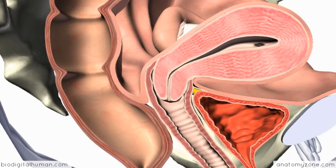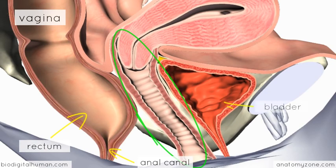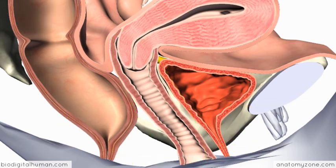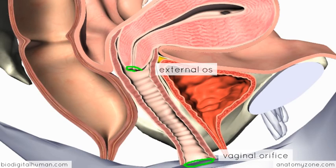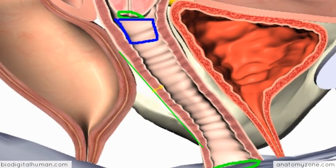The lower part of the female reproductive tract is the vagina, a fibromuscular tube that lies anterior to the rectum and anal canal, and behind the bladder and urethra. The vagina runs from the external vaginal orifice up to the cervix — the external os — and this internal end is known as the vaginal vault. Like the uterus, the vagina has three layers: an outer connective tissue layer, a middle muscular layer, and an internal mucosa.